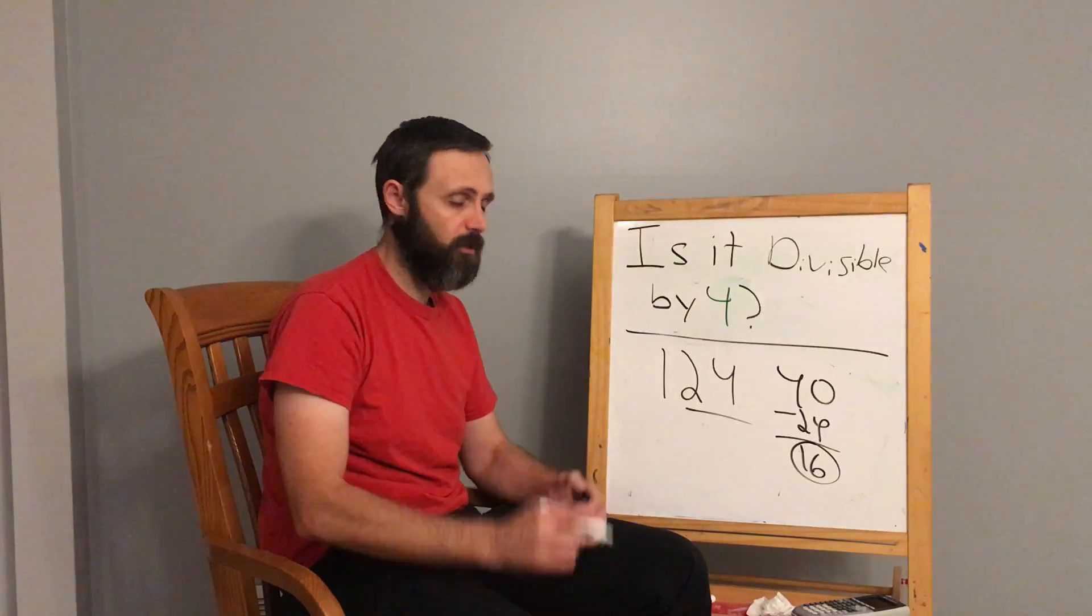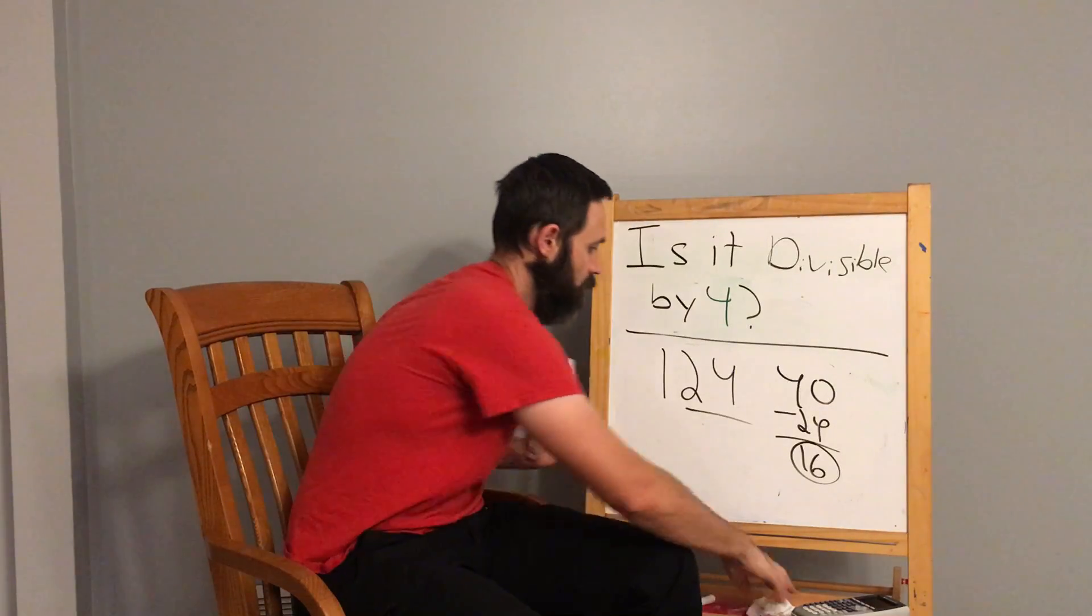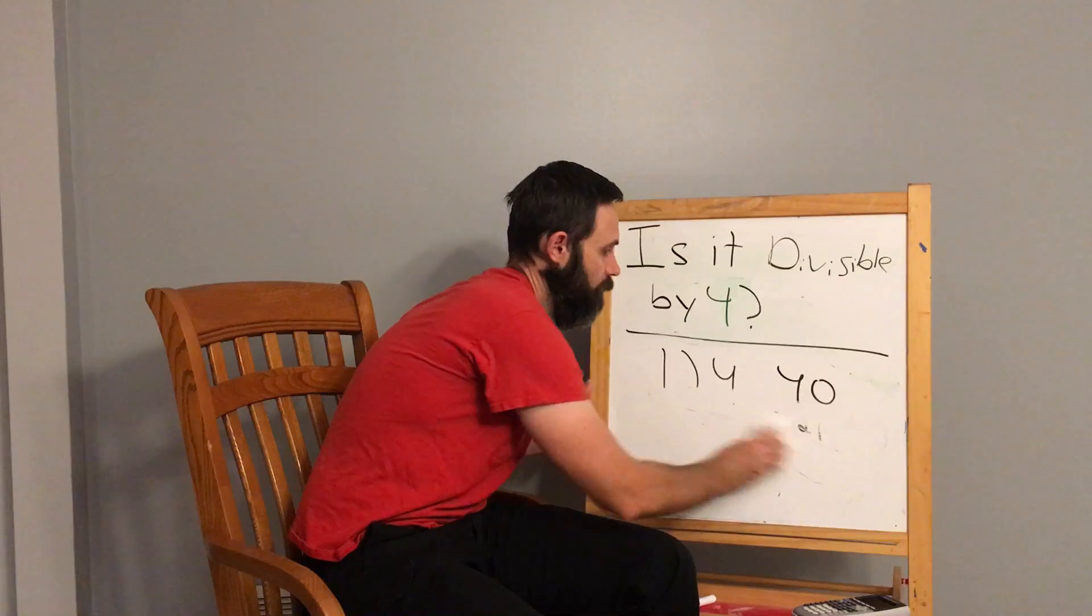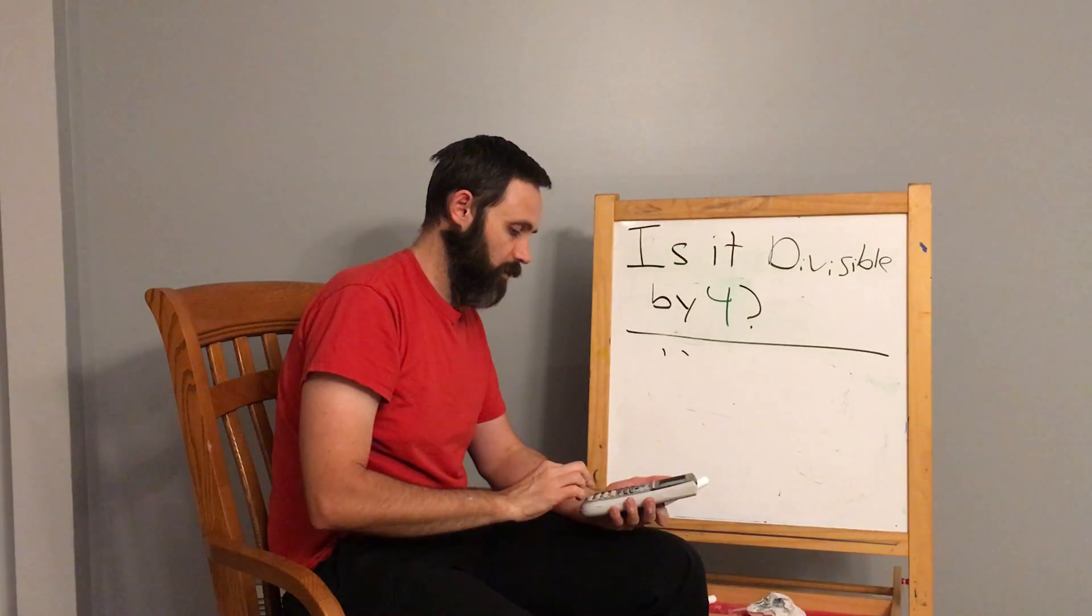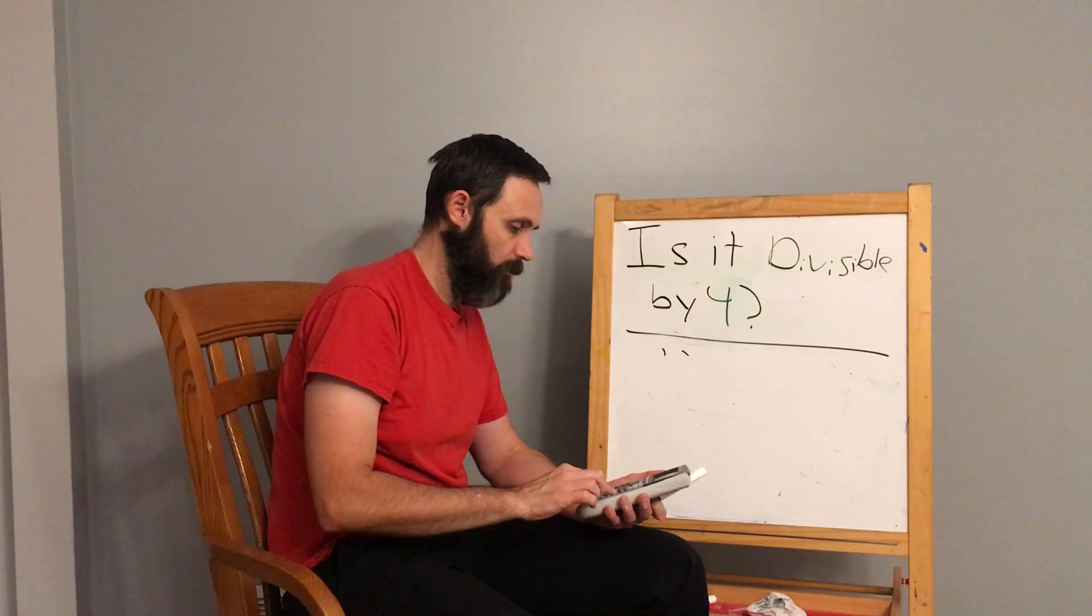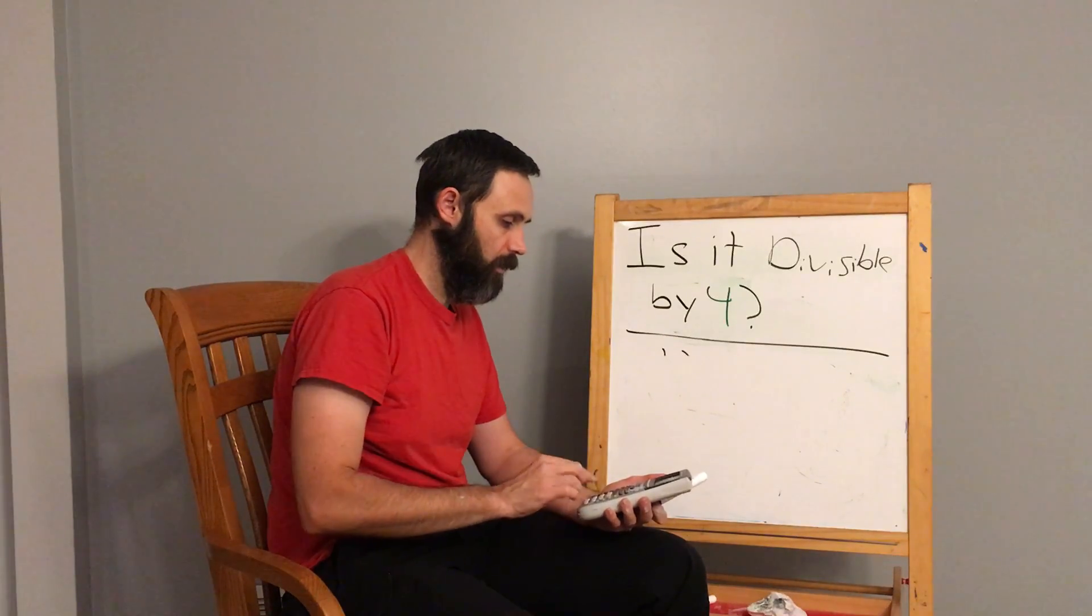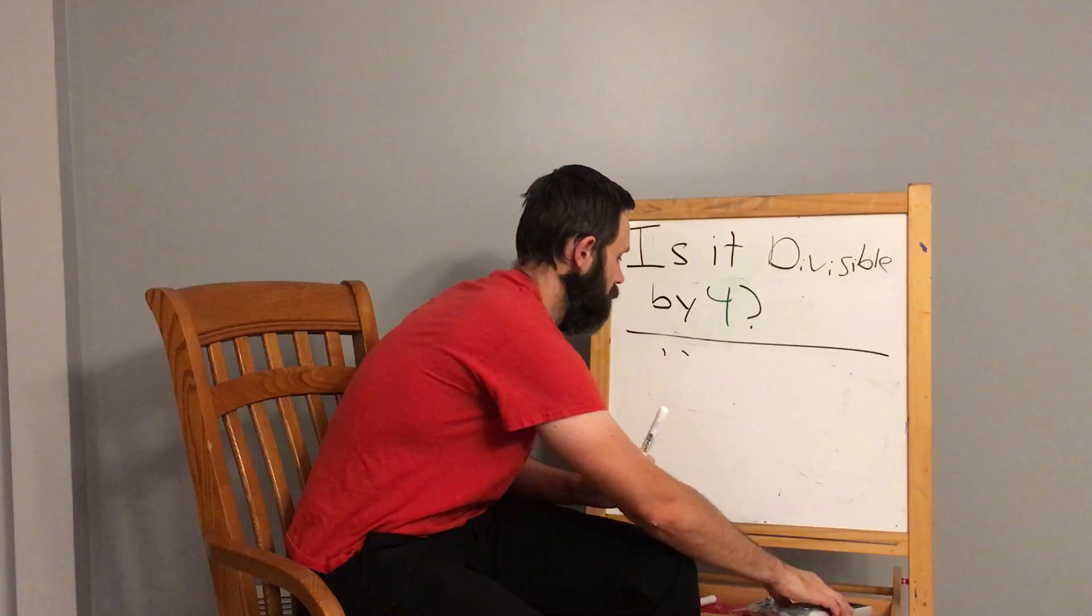That's pretty much all you're going to do. Now let's do one where it does not work out. I'm going to punch this in to prove it to you. 124 divided by 4 is 31, so that did work.